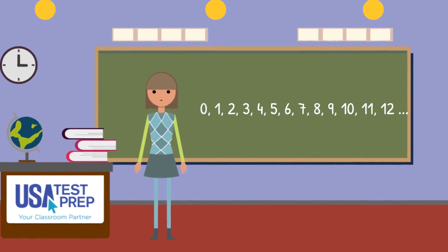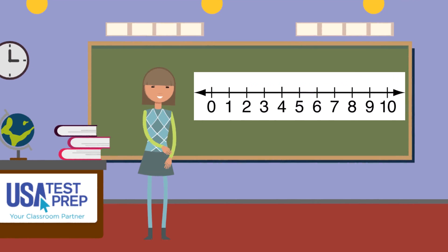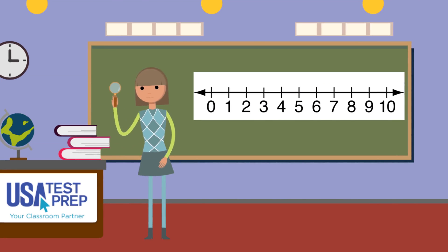A number line can be used to show the order of numbers. It can also be used to compare numbers. This is a number line. They can start and end with any number, but this number line starts with 0 and ends with 10.